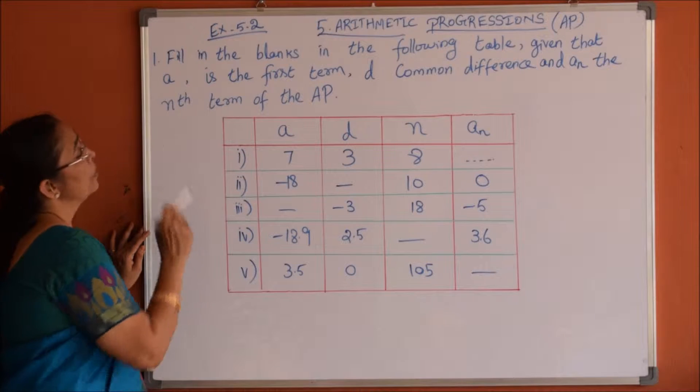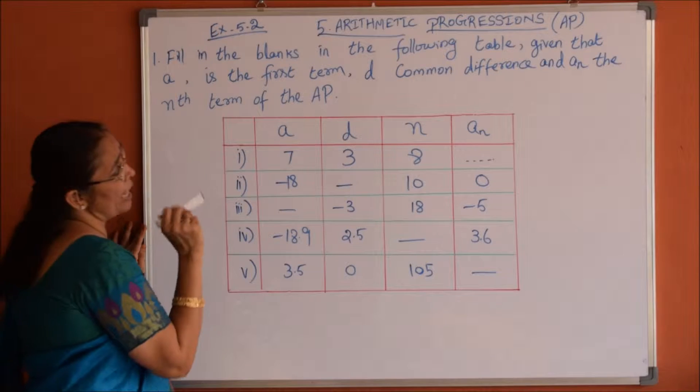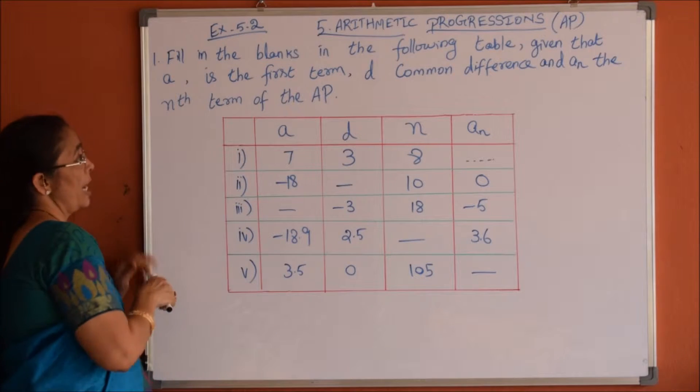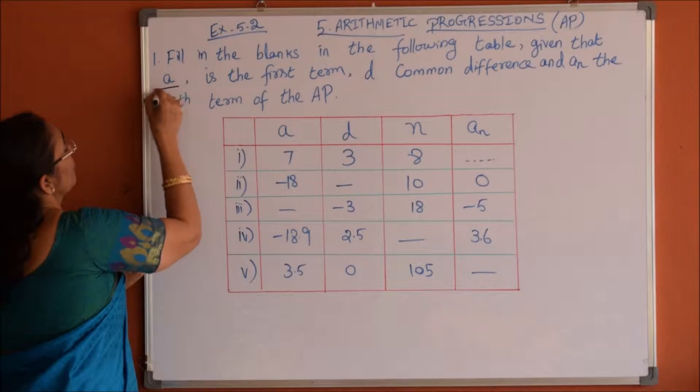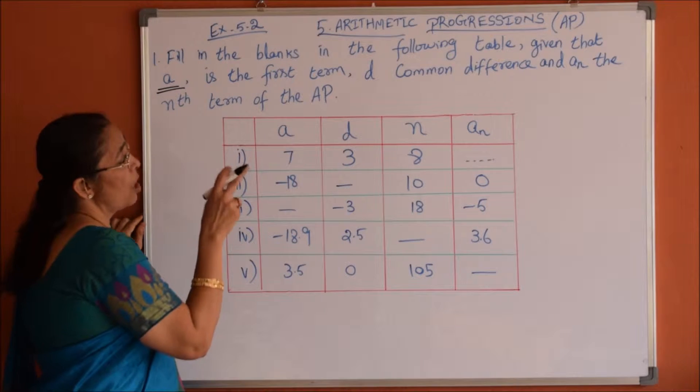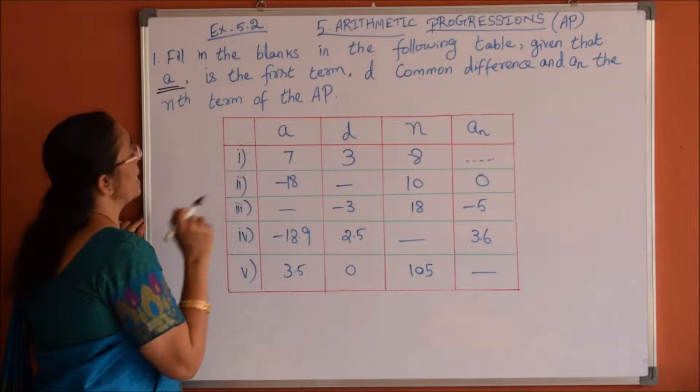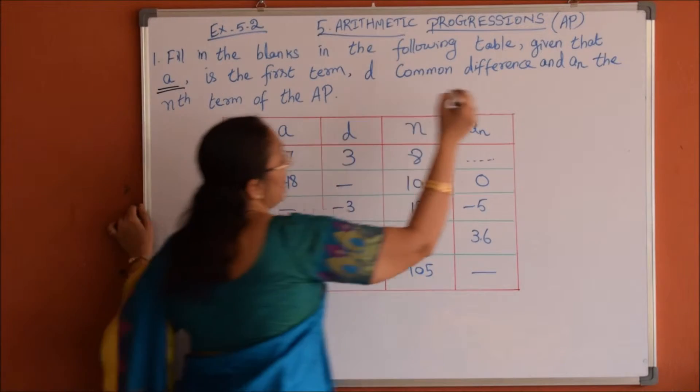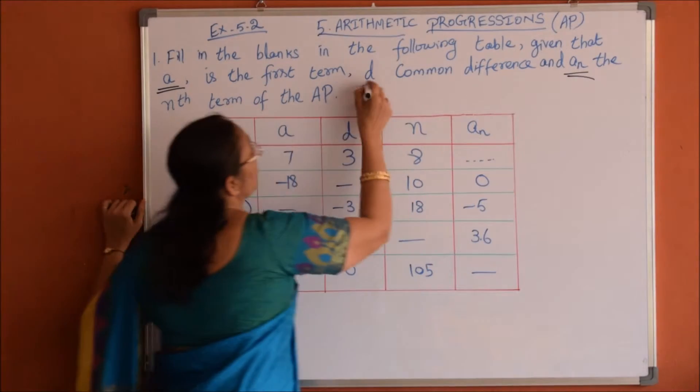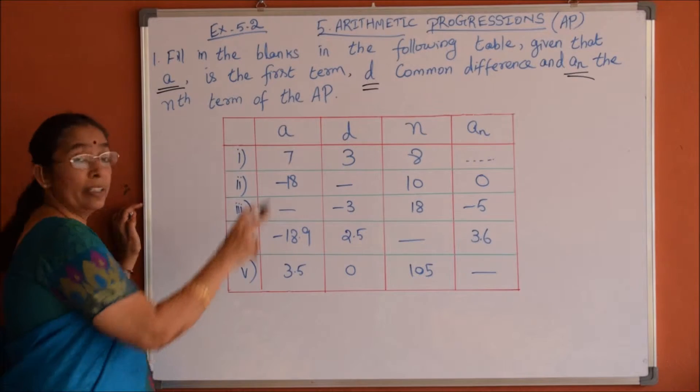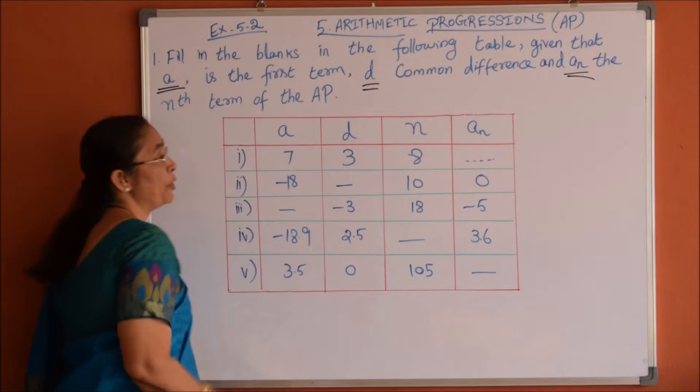Exercise 5.2: Fill in the blanks in the following table, given that a is the first term, d is the common difference, and An is the nth term of the AP. Wherever there is a blank in the table, we have to fill it up.